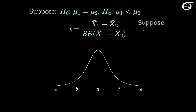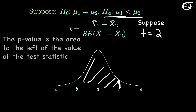Now suppose with the same observed t-statistic of 2, our alternative hypothesis is that mu1 is less than mu2. If mu1 really is less than mu2, we expect x1-bar to be less than x2-bar on average. A t-statistic far in the left tail gives evidence in favor of this alternative. The p-value is the probability of getting the observed value of 2 or something even farther to the left if the null is true — that is, the area to the left of the observed test statistic.